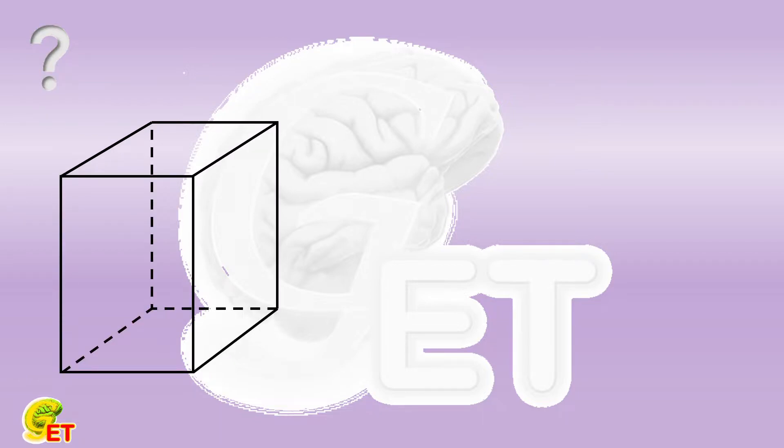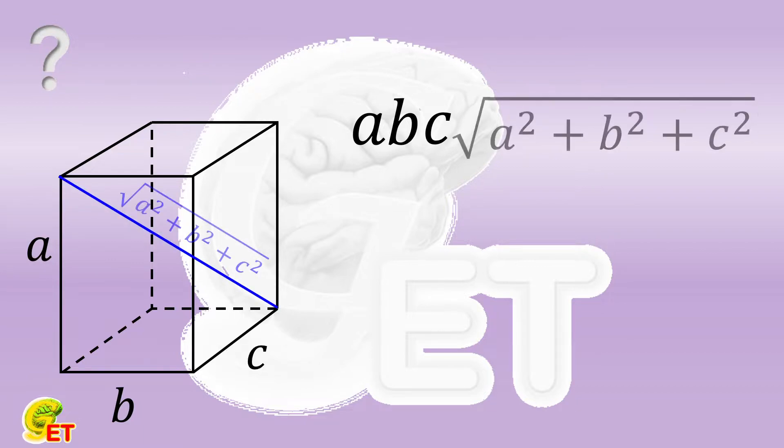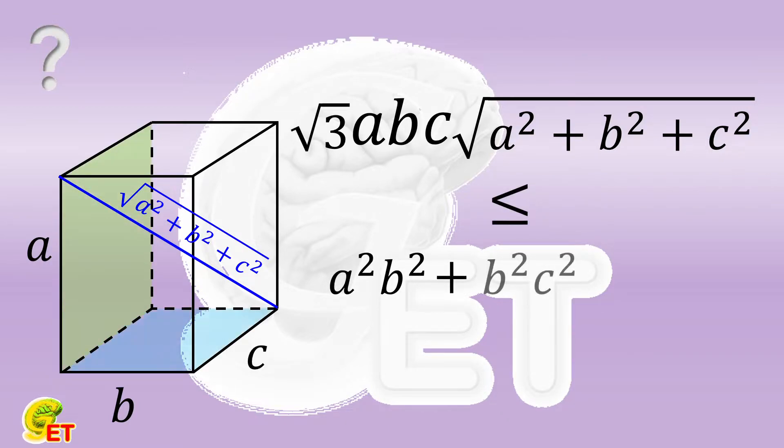There is a cuboid. And we have the product of the lengths of its 3 non-parallel edges, multiplied by its body diagonal, and multiplied by the square root of 3. It is not bigger than the summation of the squares of the areas of 3 non-opposite faces.